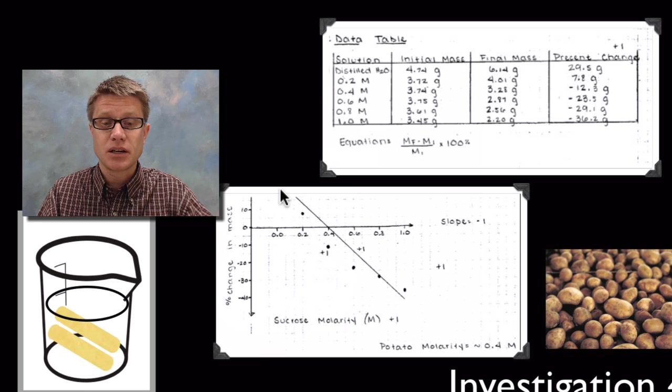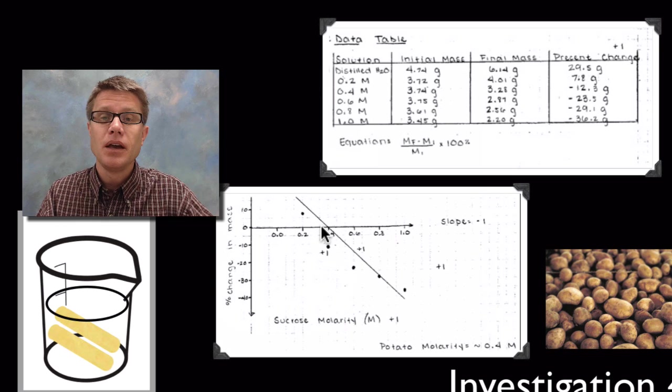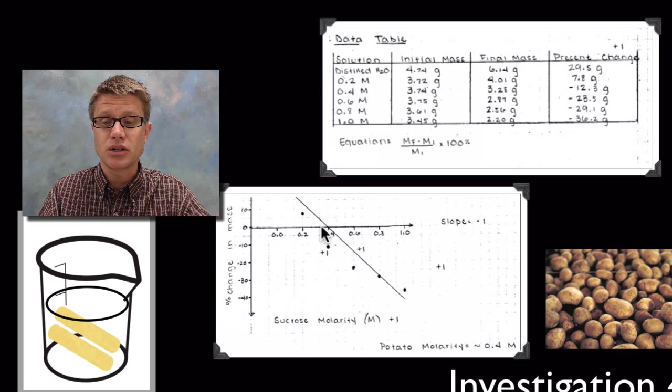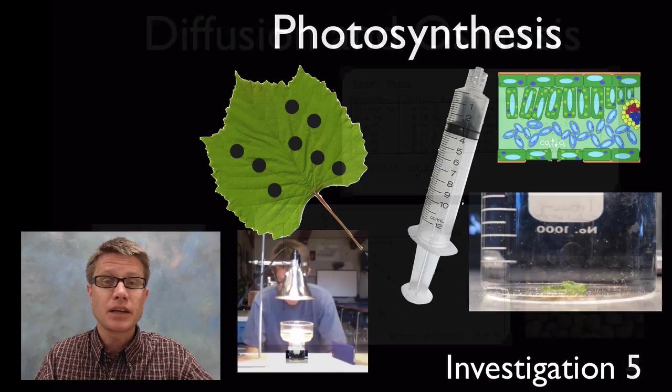What you'll find is in the 0.0, the distilled water, the potatoes are actually going to see an increase in their percent mass. On this side they're going to see a decrease. This is a nice line of fit right here. You can see where it crosses the line—that would be where they're isotonic to their surroundings. That would be the solute concentration of the potatoes themselves.